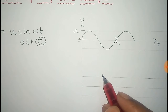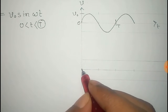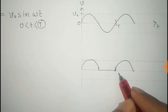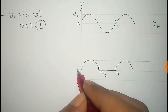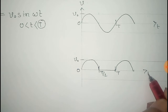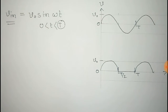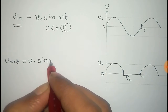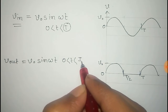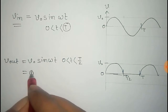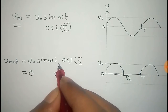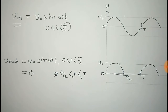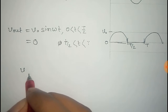For this input signal, the output signal of the half-wave rectifier looks like this. Here is the time period T, and half time period T/2, initial point zero, and peak voltage V₀ on the time axis. The output signal V_out equals V₀ sin(ωt) for the range 0 < t < T/2, and equals 0 for the range T/2 to T.